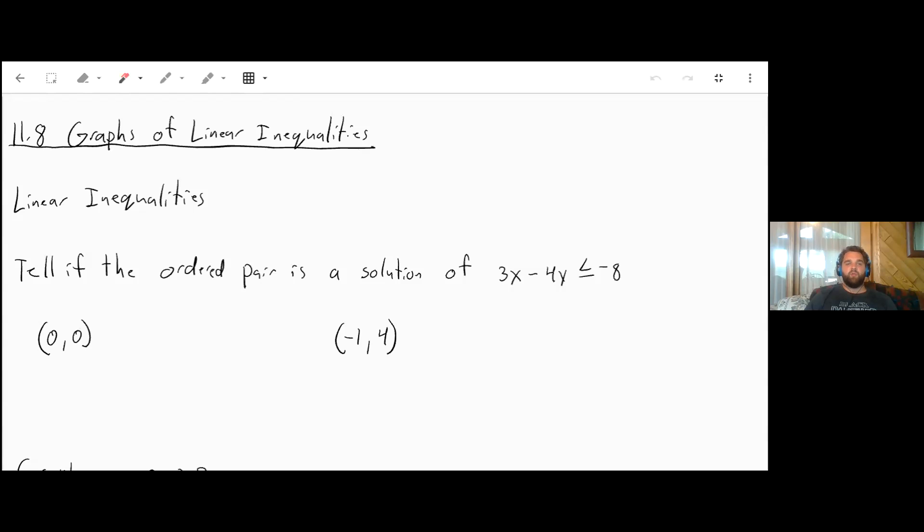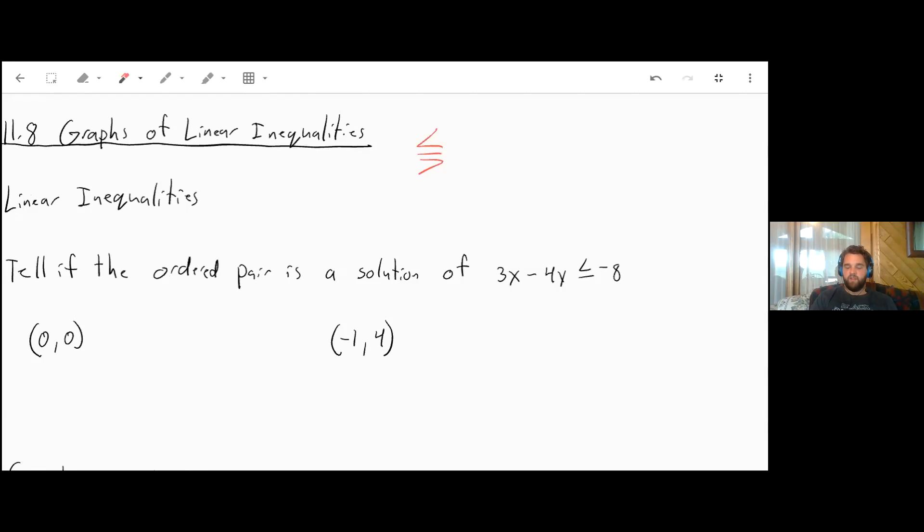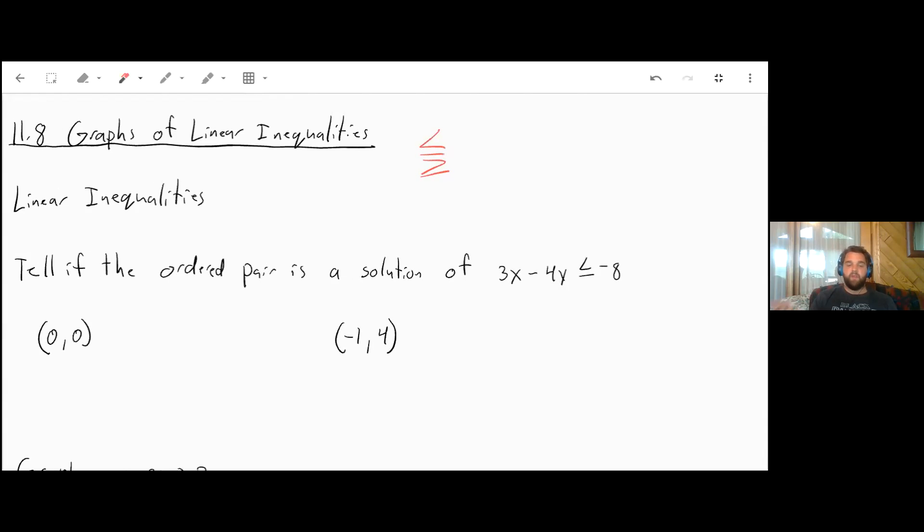Welcome to section 11.8, Graphs of Linear Inequalities. A linear inequality is like an equation of a line, except you have an inequality instead of an equal sign. Inequalities have greater than or less than signs. Sometimes they'll have a bar underneath to say it could be equal to. It does not necessarily have to be equal; it can be unequal, hence the term inequality.